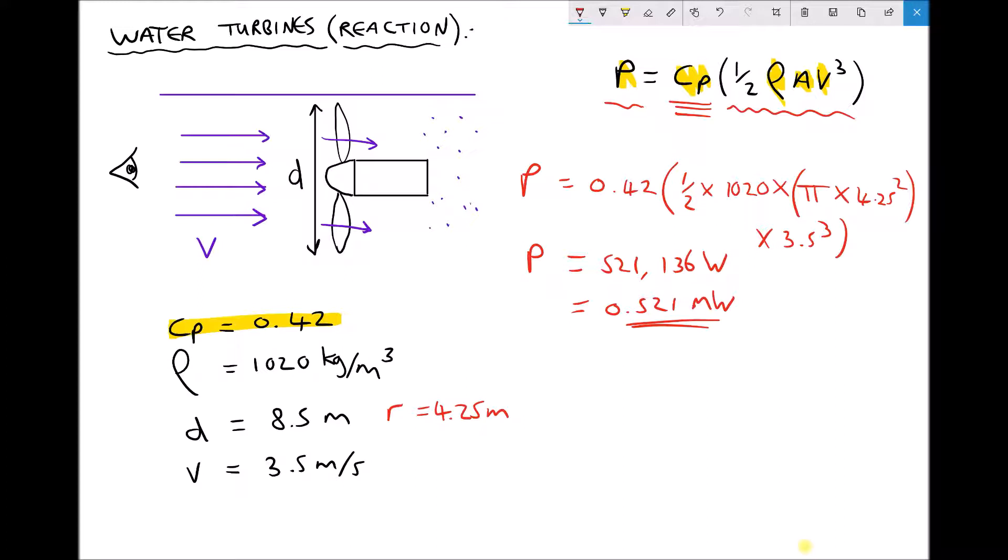So another interesting thing we can do here is take the rated power of a turbine and determine what fluid velocity is necessary in order to achieve rated power. So let's say for example our subsea turbine here has a rated power of 1 megawatt. So this time we know the power and we're going to try and find the velocity.